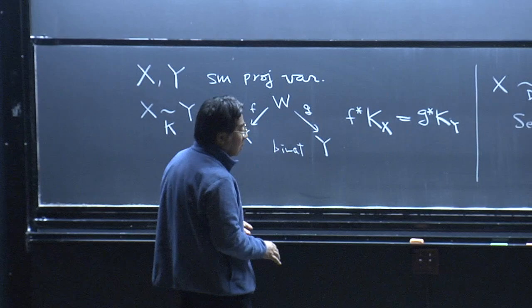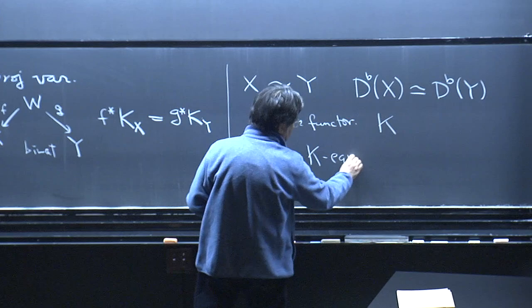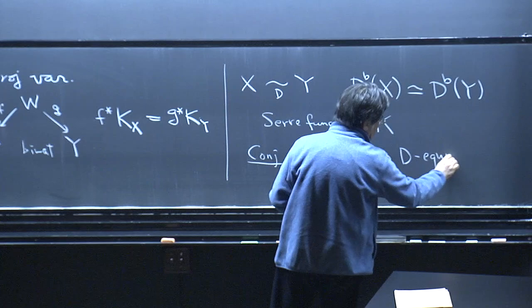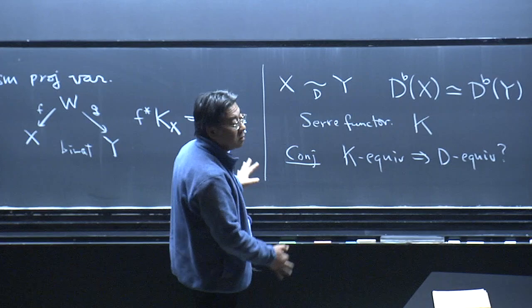The conjecture is that K-equivalence implies D-equivalence. There are varieties which are not birational but are D-equivalent, so D-equivalence is broader than K-equivalence, which is defined only for birationally equivalent varieties.